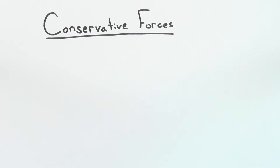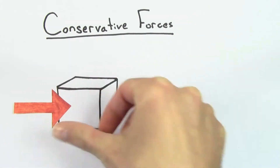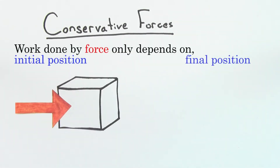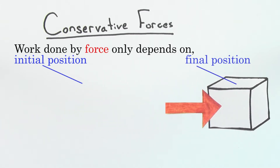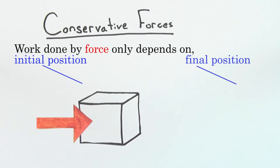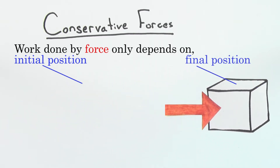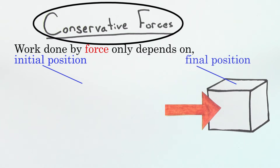What's a conservative force? Conservative forces are any force wherein the work done by that force on an object only depends on the initial and final positions of the object. In other words, the work done by a conservative force on a mass does not depend on the path taken by that mass. If the work done by a force follows this rule, then we call it a conservative force.